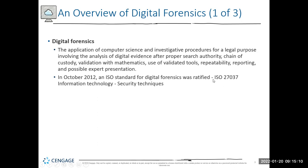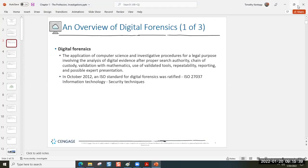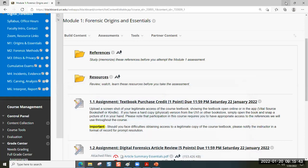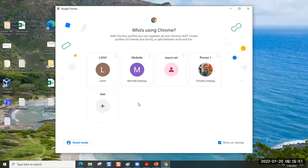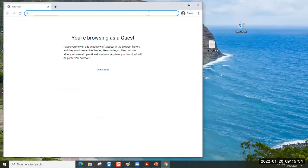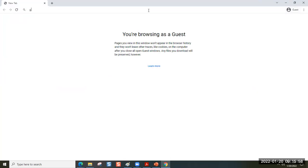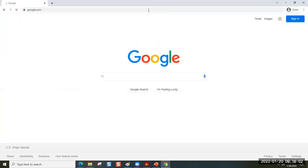ISO is an international standards organization based out of Switzerland. We are a member nation, along with over 100 other nations that participate in ISO standards. The standard number is 27037. One thing about standards is that we're dealing with a moving target in forensics — that is a real challenge because methods are subject to change, even instantly, because our adversaries are very gifted.